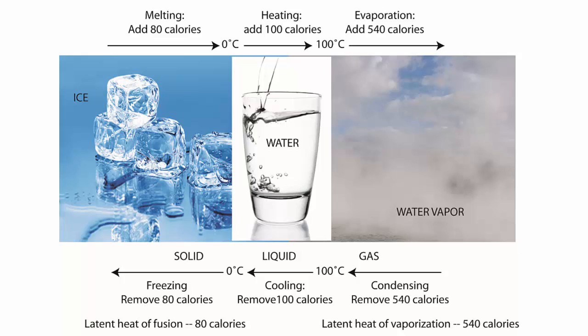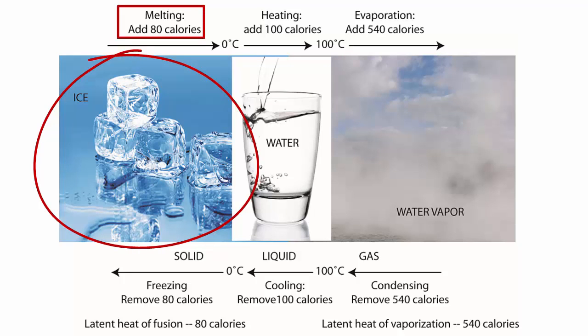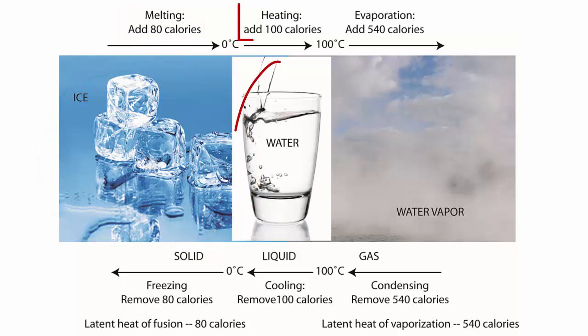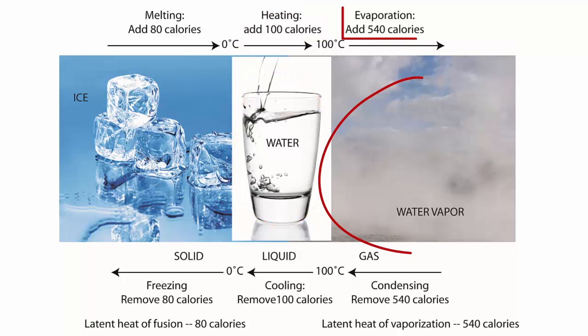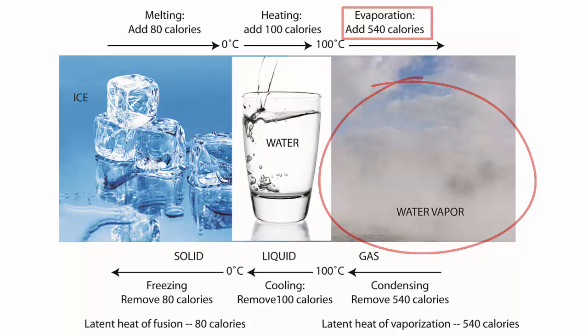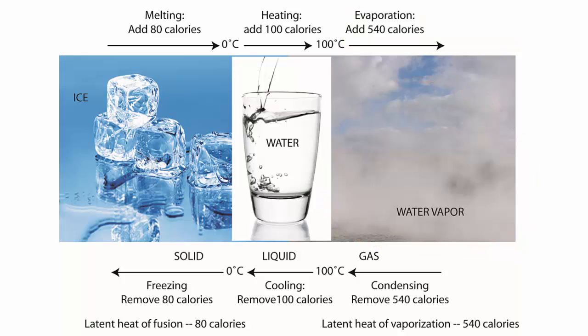This image helps us see how heat or kinetic energy is transferred during the changes of phase from ice to liquid water to vapor. To melt 1 gram of ice takes 80 calories. To warm that gram 1 degree Celsius takes 1 calorie, and to warm it 100 degrees to its boiling point takes 100 calories. To evaporate it takes 540 calories. Whatever provided that heat, such as the surrounding air, will be cooler as a result, because it gave up heat and its temperature dropped.